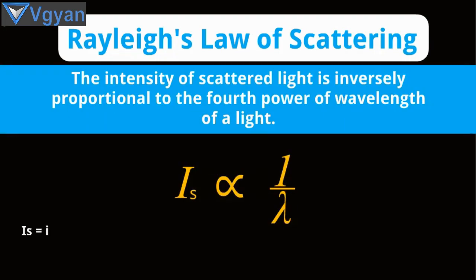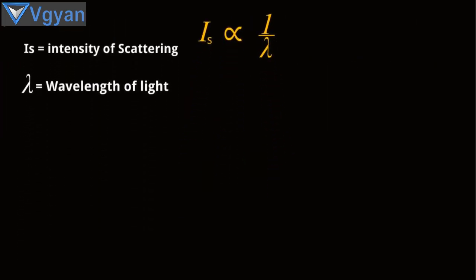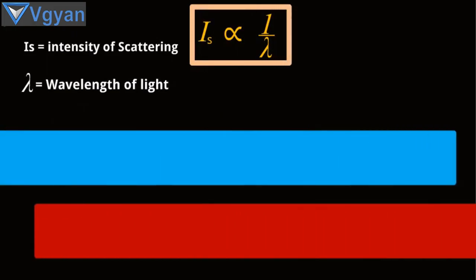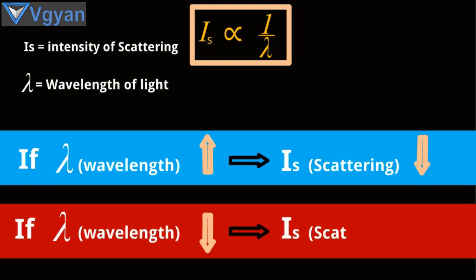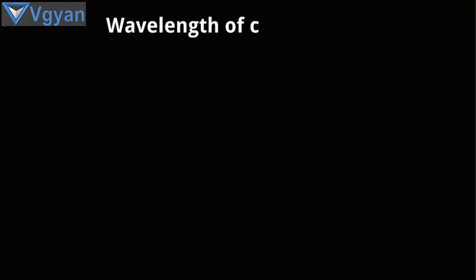Here I is the intensity of scattered light, and lambda represents the wavelength of light. From this expression we can say: if lambda (the wavelength of light) increases, then scattering decreases, and if wavelength of light decreases, then scattering increases.